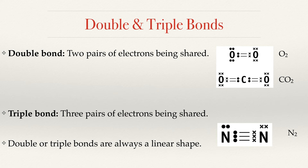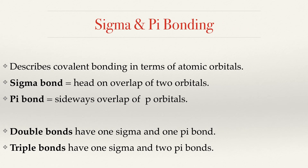While we are discussing shapes of covalent compounds, we should note that any molecule that contains a double or triple bond is automatically classified as a linear shape. You also need to know a little about sigma and pi bonding — they both refer to the way orbitals overlap. For your leaving certificate, the only thing you are asked is to state the definitions of sigma and pi bonding and to state the number of sigma and pi bonds in a molecule.